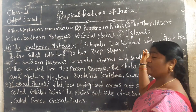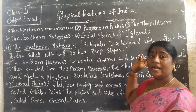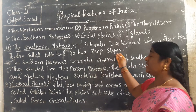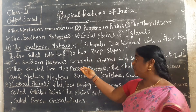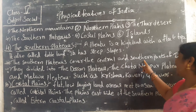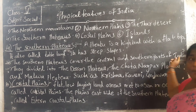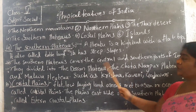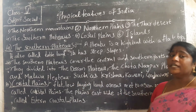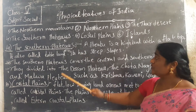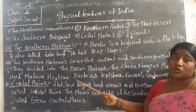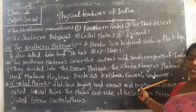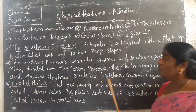It is a high land with a flat top. It is also called table land. It has steep slopes. The southern plateau covers the central and southern parts of India, and it is divided into the Deccan Plateau, the Chota Nagpur Plateau, and the Malwa Plateau. Rivers such as Krishna, Kaveri, and Godavari also flow in this southern plateau.